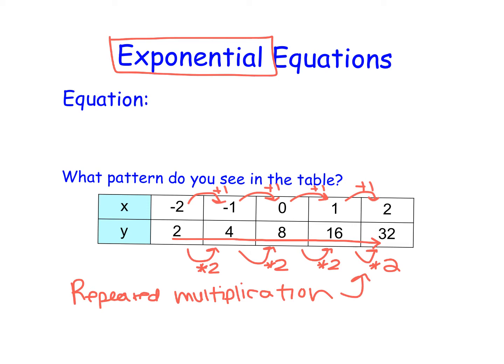That's the pattern we're going to see with exponentials. With linear graphs we had y equals mx plus b, but with exponential graphs we have y is equal to a times b to the power of x. Within this equation we have two special values: a and b. The a value is our starting value — our y-intercept value — which is where we cross the y-axis, when x is 0.